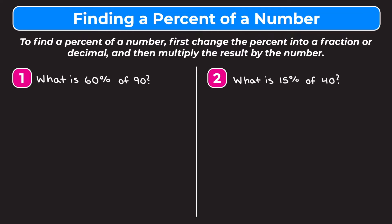Example one says: what is 60% of 90? We're going to write this as an equation. 'What' is what I'm solving for, so that's going to be X. 'Is' always means equal in math, so we have X equals. We cannot put a percent into our equation, so we need to change it to a decimal. To change 60% into a decimal we move the decimal point two places to the left, giving us 0.6. 'Of' in math always means multiplication, so we have 0.6 times 90.